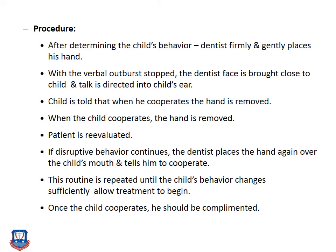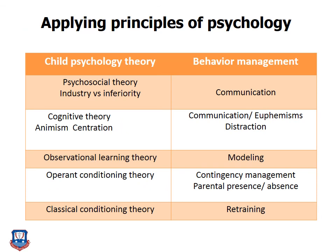Applying the principles of child psychology to behavior management: the psychosocial theory relates to industry versus inferiority and is applied through communication; cognitive theory (animism, centration) through communication, euphemisms, and distraction; observational learning theory through modeling; operant conditioning theory through contingency management and parental presence or absence; and classical conditioning theory through retraining.